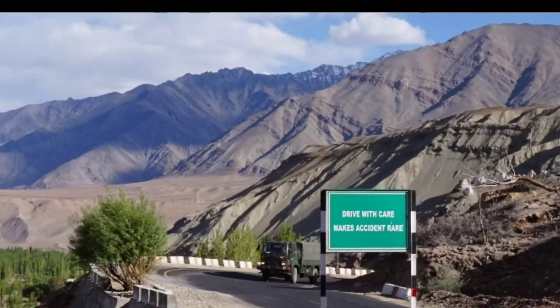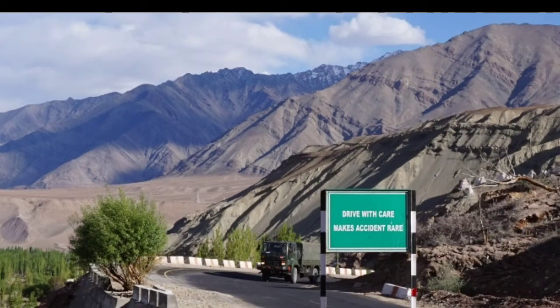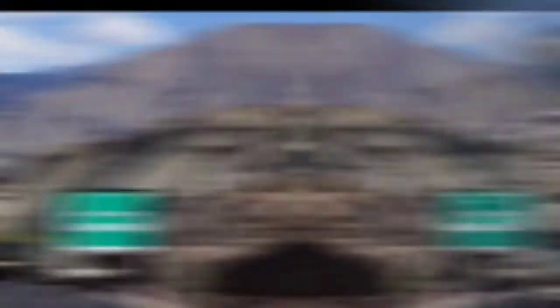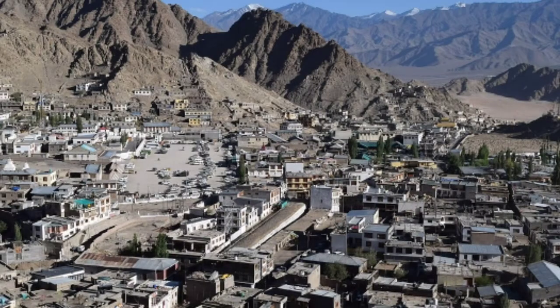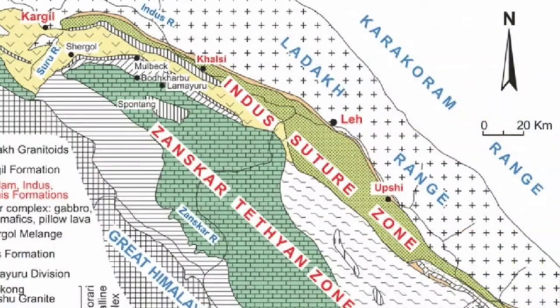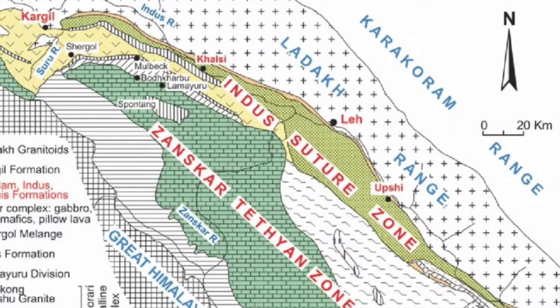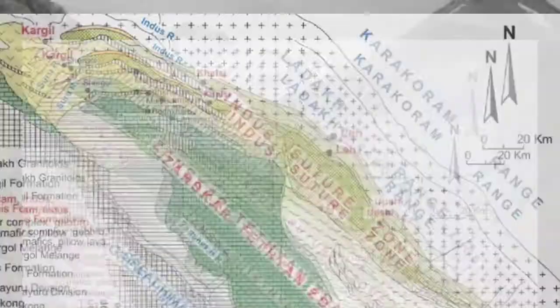To understand the origin of this lake, first we have to know the tectonic geology of Ladakh. Ladakh Himalayas lies in the northern part of India. It is bounded by the Karakoram Fault towards the north and the Suture Zone towards the south. They both are active faults. A fault is a geologic term meaning a fracture along which there are significant displacements of rock blocks.